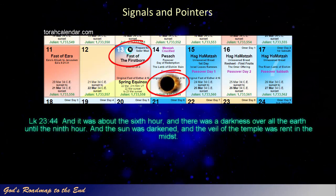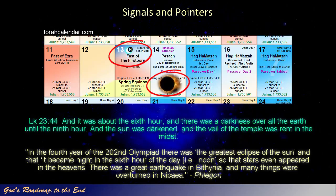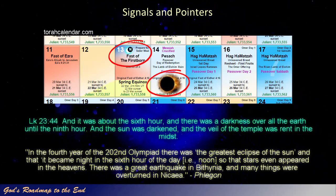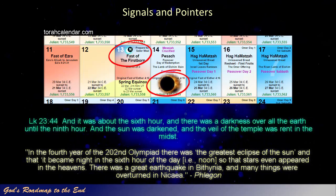This is what the Greek historian Phlegon wrote: 'In the fourth year of the 202nd Olympiad, there was the greatest eclipse of the sun, and that it became night in the sixth hour of the day, so that stars even appeared in the heavens. There was a great earthquake in Bithynia, and many things were overturned in Nicaea.'